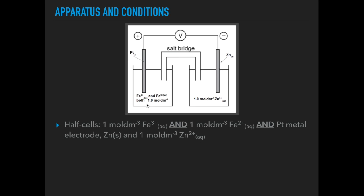So the important stuff for this beaker, we need to have in there 1 mol dm⁻³ Fe³⁺ and 1 mol dm⁻³ Fe²⁺ solutions in the beaker. So that means that our electrode can't be made of iron. It has to be made of platinum.